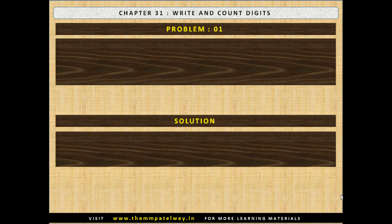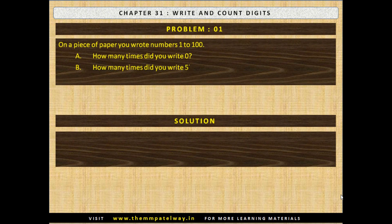Problem No. 1: On a piece of paper you write numbers 1 to 100. a) How many times did you write 0? b) How many times did you write 5? and c) How many times did you write 1?